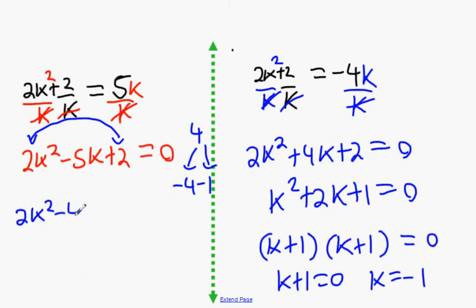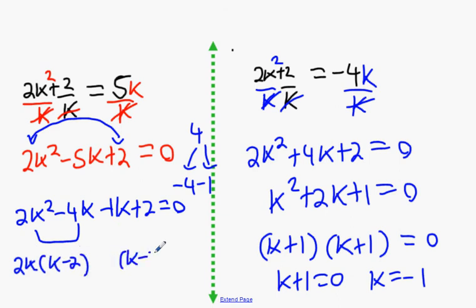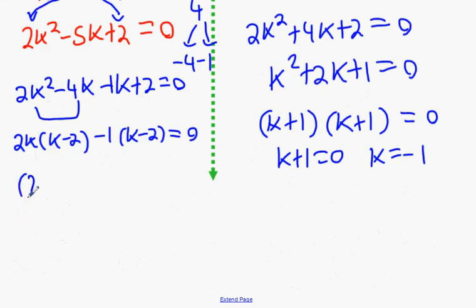Take your choice which order you want them in. It doesn't really matter. Minus 4k, minus 1k, 1k plus 2. What do we take out of the first two? 2k, bracket k, minus 2. And then what goes in here? Minus 1. Finish it off. 2k, minus 1.